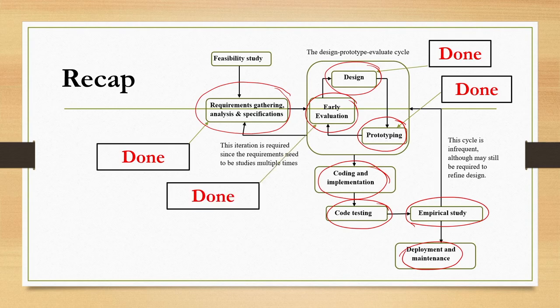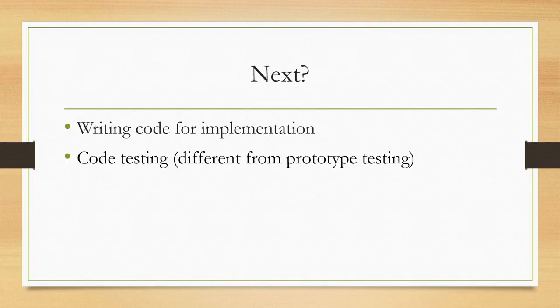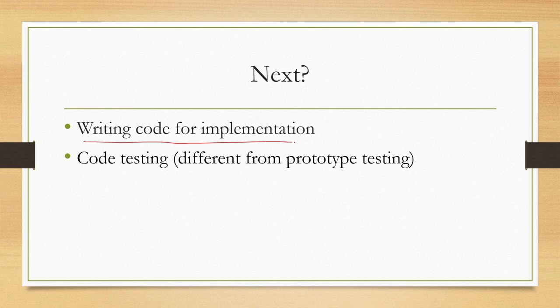Prototyping and evaluation of prototyping have also been covered in our earlier lectures. There are two designs which we mentioned: one is the design of the interface, where the primary concern is usability and we require prototyping and evaluation to come up with a usable interface. The other design is the design of the system or code design. Once we come up with a design of the code, what is next? Next is writing the actual code and that is followed by testing of the code.